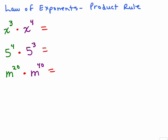The first one is X cubed times X to the fourth. Now X cubed means X times X times X.